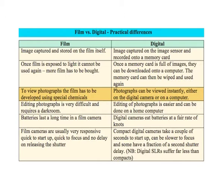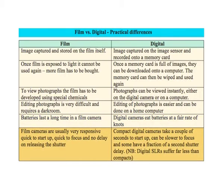To view photographs from a film camera, it has to be developed using special chemicals. Photographs can be viewed instantly either on the digital camera or the computer when using a digital camera. Editing photographs is very difficult and requires a dark room for film cameras, whereas editing is easier and can be done on a home computer with a digital camera. Batteries last a long time in a film camera, while digital cameras consume batteries at a fair rate. Film cameras are usually very responsive — quick to start up, quick to focus, and no delay on releasing the shutter. Compact digital cameras take a couple of seconds to start up, can be slower to focus, and some have a fraction-of-a-second shutter delay, though digital SLRs suffer far less than compacts.